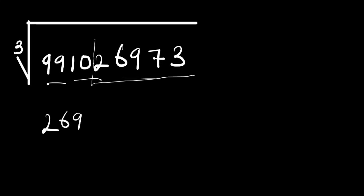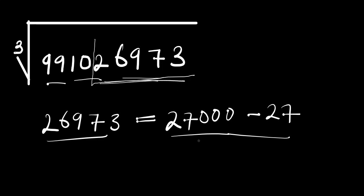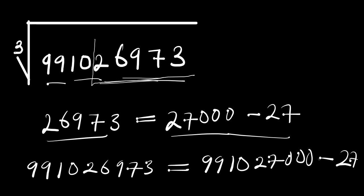26,973 simply equals 27,000 minus 27. Twenty-seven thousand minus twenty-seven will give you exactly this number 26,973. So we can comfortably replace this number with 27,000 minus 27. That means we are going to have 9,910,|27,000 minus 27|, which is the same thing.